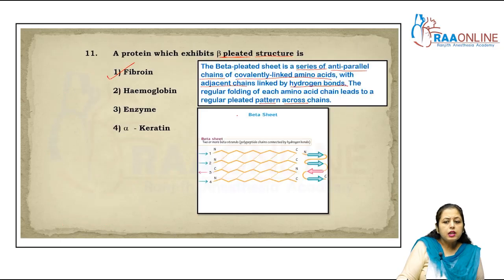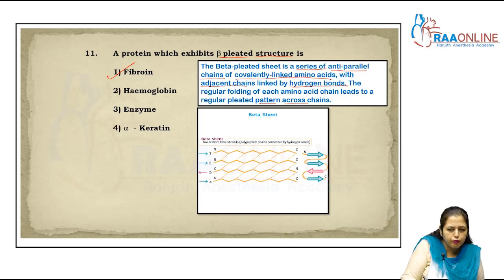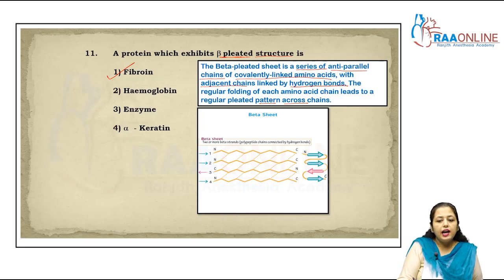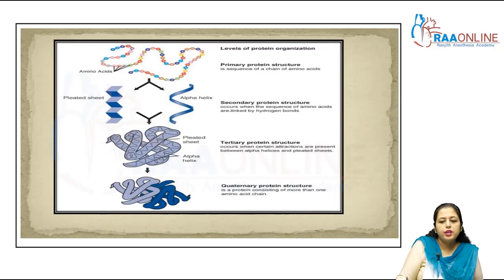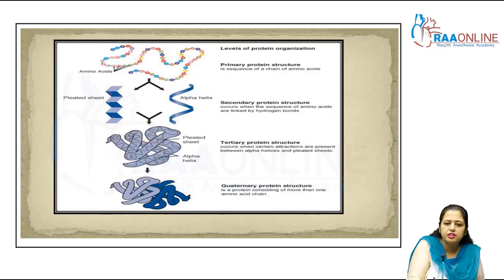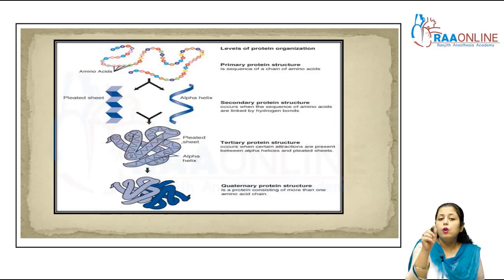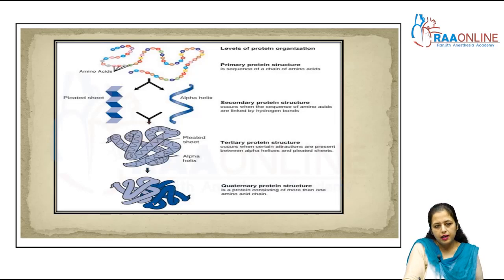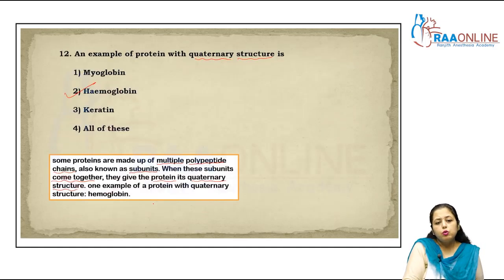The tertiary structure occurs when attractions between alpha-helix and beta-pleated structures combine to form a three-dimensional shape. The quaternary structure is when a protein consists of more than one polypeptide chain — four polypeptide chains in the case of hemoglobin. Myoglobin is similar to hemoglobin in structure but is a muscle protein belonging to the globin superfamily. It consists of eight alpha-helices connected by loops and contains 154 amino acids with a porphyrin ring with iron at its center.